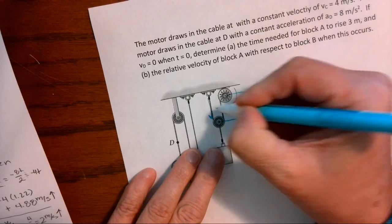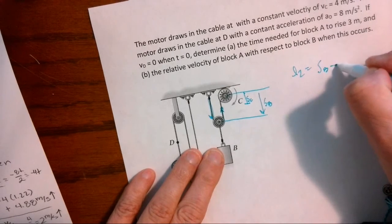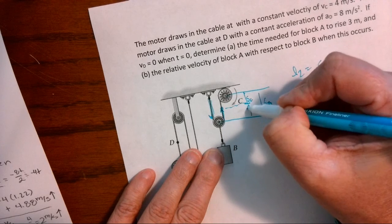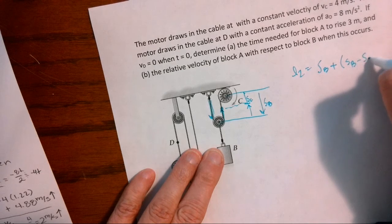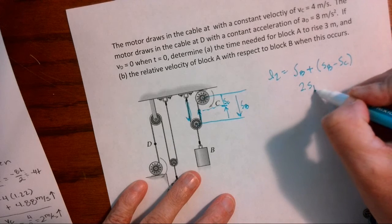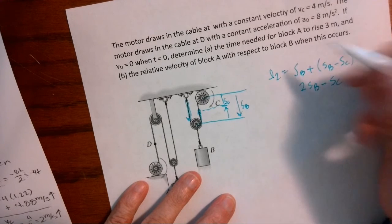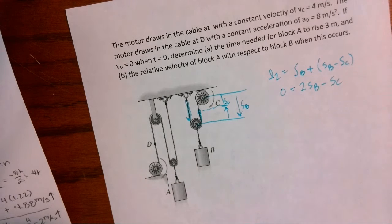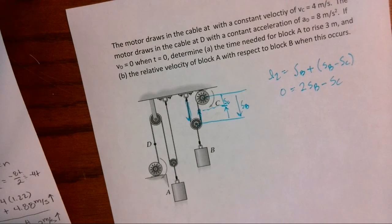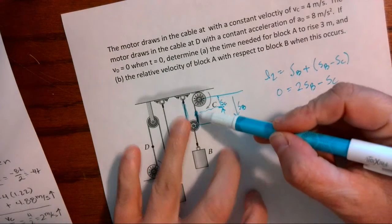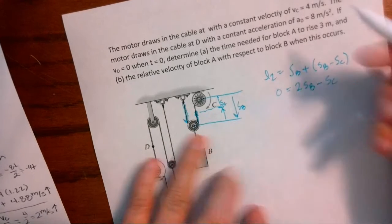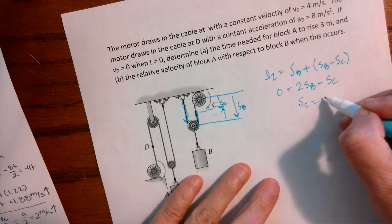I have SB plus, and I come back up, SB minus SC. So I get two SB minus SC. And I know that when I take the derivative, it's going to go to zero. I also know the length doesn't really matter. It's this relationship between where I am as I move up and down with this pulley. So SC is 2SB.